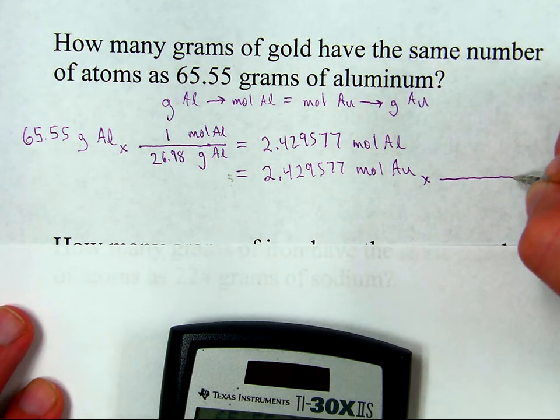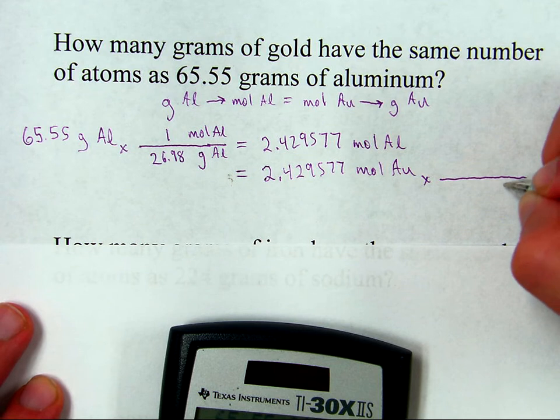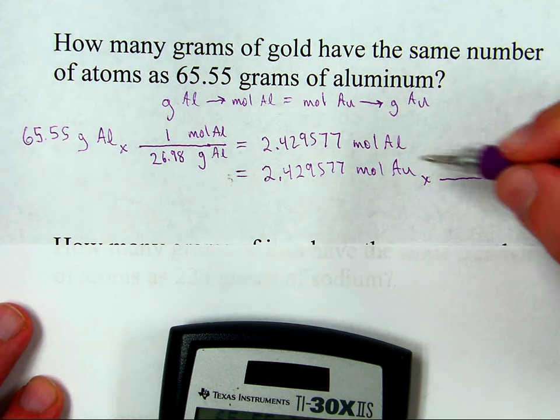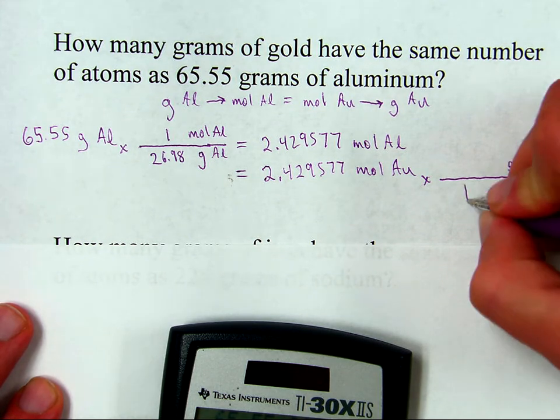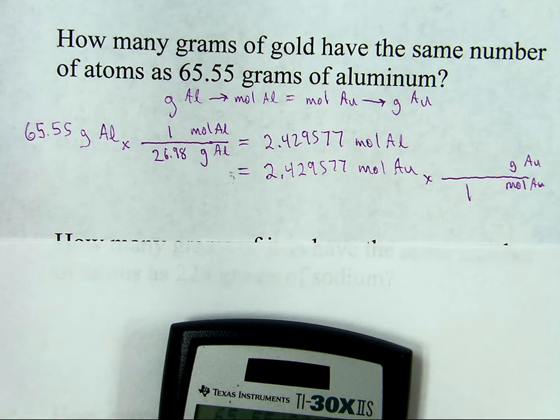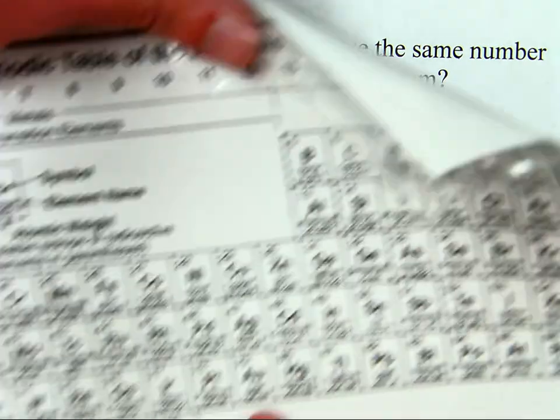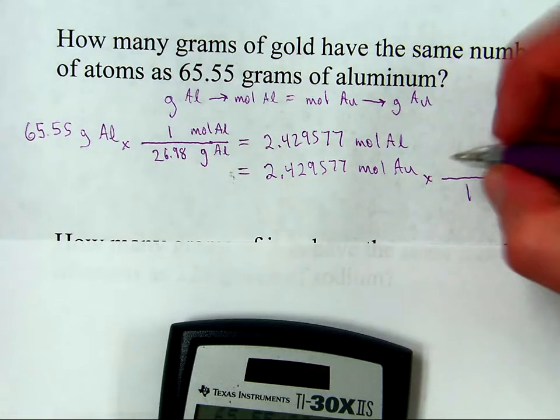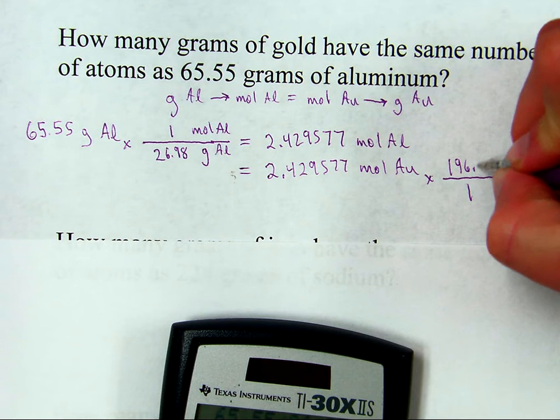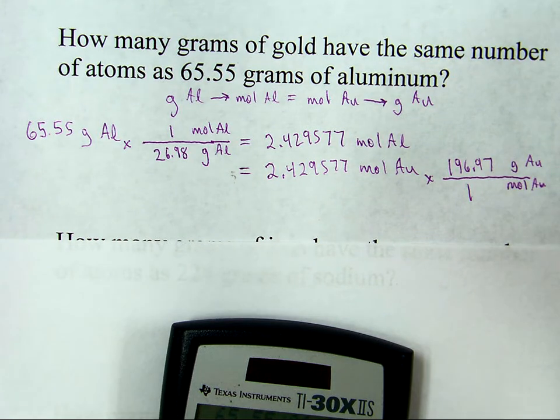So I need to use grams per mole. Now I'm going to use the molar mass in the periodic table. So I'm going to do grams per mole. That way moles cancels moles. So that'll be grams of gold per moles of gold. And according to the periodic table, one mole of gold has a mass of, oh, let's see, right here, 196.97. So 196.97. That is the mass of one mole of gold.